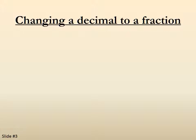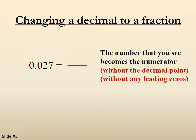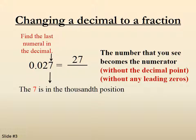0.027. Again, we draw the fraction bar. The number that you see becomes the numerator, without the decimal point, and in this case, without any leading zeros — those are zeros between the decimal point and the first non-zero number, which in this case is a 2. So 27 becomes the numerator. We find the last numeral in the decimal, which in this case is a 7. The 7 is in the 1,000th position, so we put 1,000 in the denominator. So 0.027 becomes 27 over 1,000.